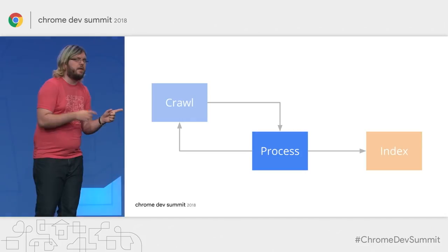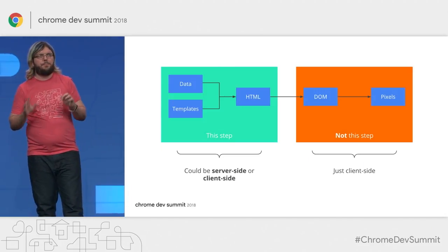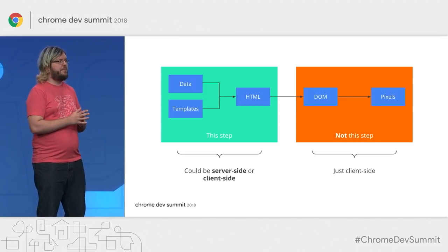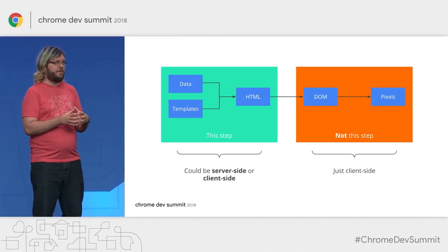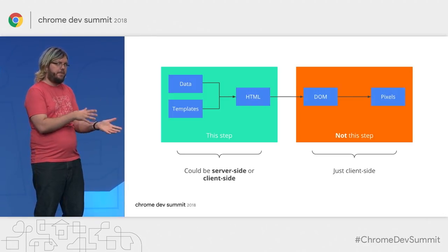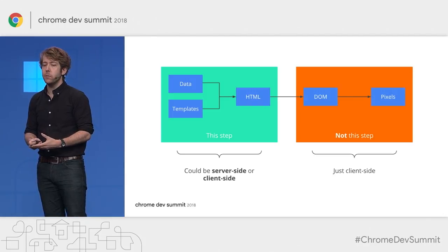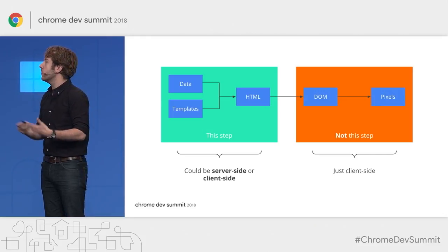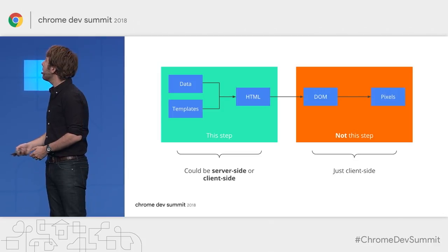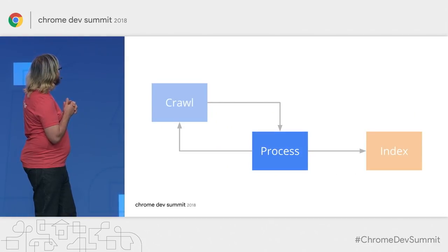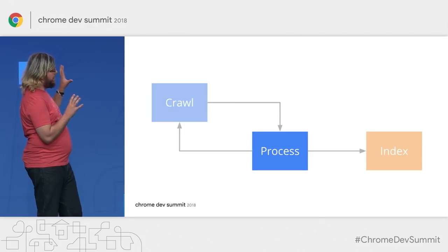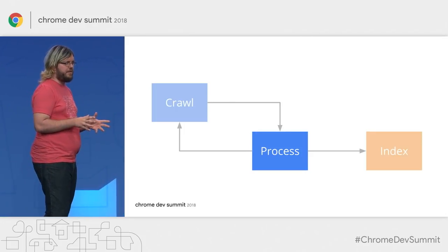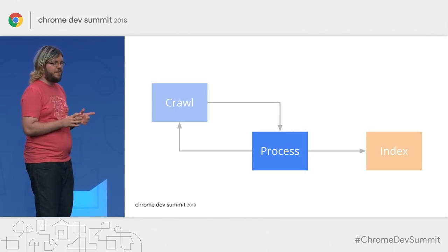MARTIN SPLITT: So when you say rendering, you don't mean putting pixels onto the screen or dealing with DOM transitions and animations — it's just where does the HTML get constructed? Like server-side rendering versus client-side or hybrid rendering? TOM GREENAWAY: Exactly. Traditionally, websites were rendered entirely on the server, and any JavaScript used was probably just for cosmetic purposes. But now that web architectures have changed substantially, what happens in the processing step today?